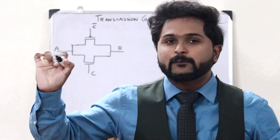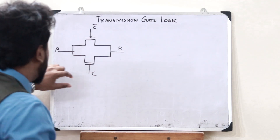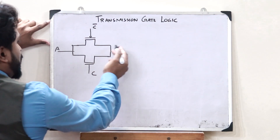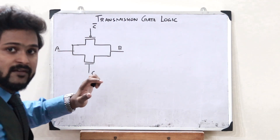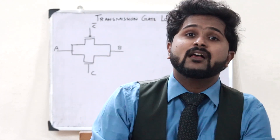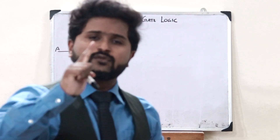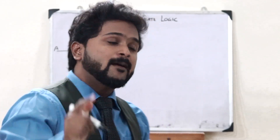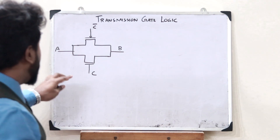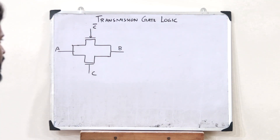They can pass the entire range of voltage, that is, between 0 and VDD. Whatever input we give at A, we will get the exact output at B without any loss. This was one of the major drawbacks of pass transistor logic, where only one NMOS transistor was used. Here, by using both an NMOS and a PMOS transistor, we can pass whatever input we give at A to the output.